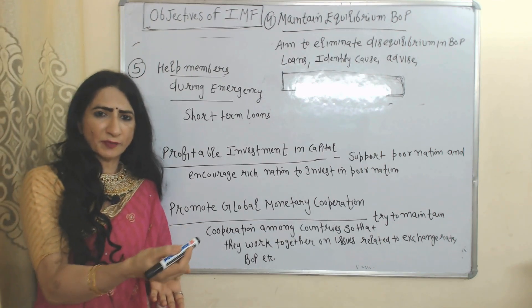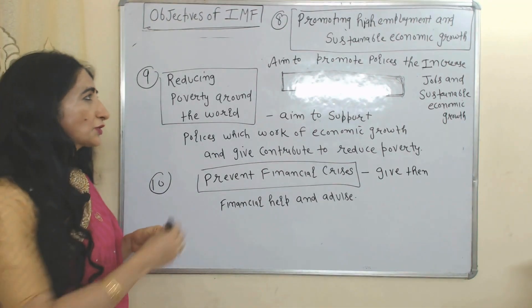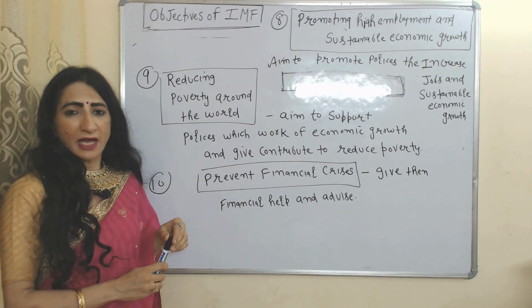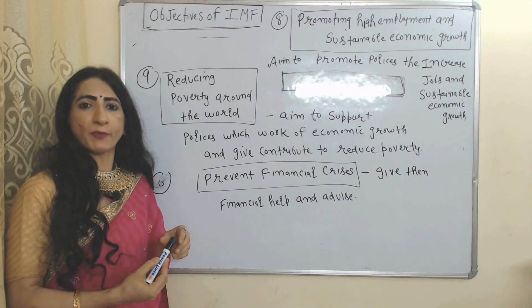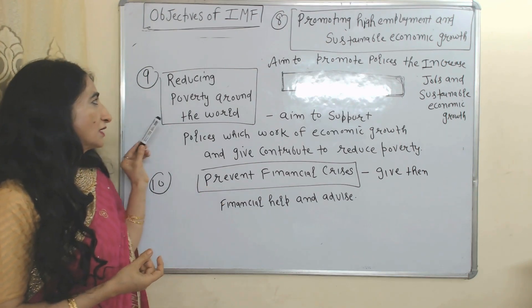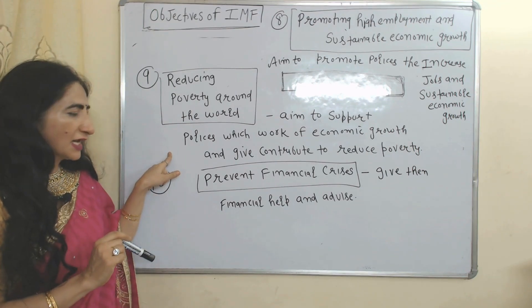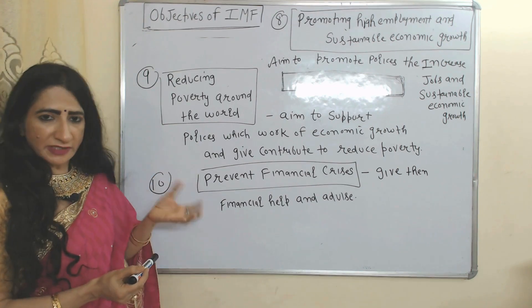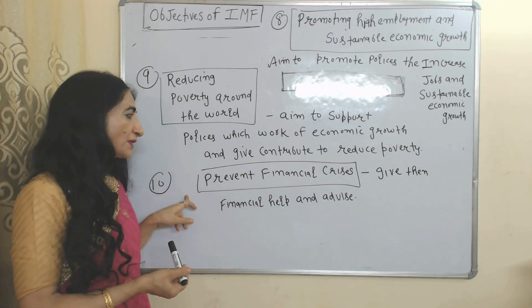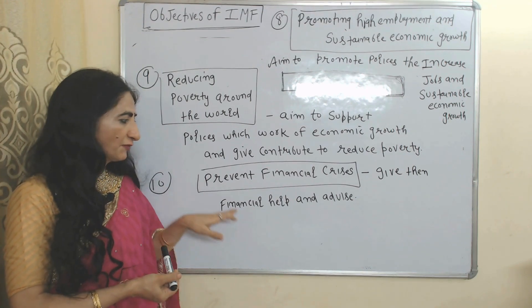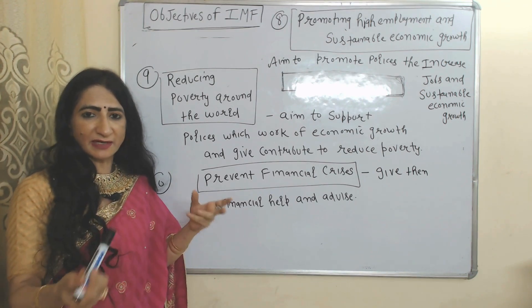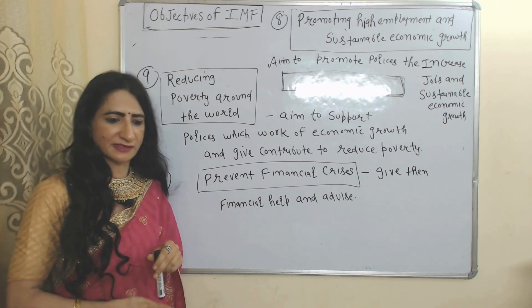Next objective: promoting high employment and sustainable economic growth — IMF aims to work on policies which increase employment and sustainable economic growth. Reducing poverty around the world — IMF aims to support policies which contribute to reducing poverty. Prevent financial crisis — IMF gives financial help and advice to its member countries so that they can prevent their financial crises.